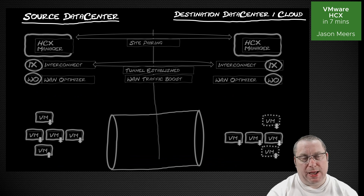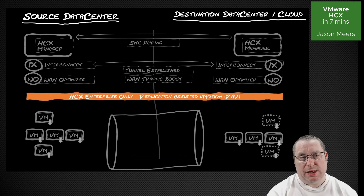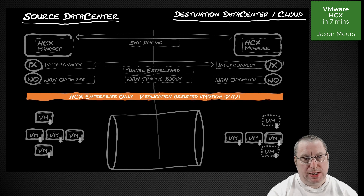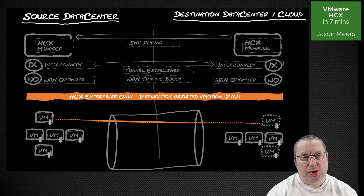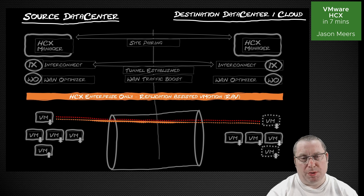This next feature is an HCX Enterprise-only feature called Replication Assisted vMotion. We've got the interconnect and WAN optimizer; it's up to us whether we use the network extension or not, but the only requirement is HCX Enterprise. This time I've got a virtual machine and I'm going to do a cold migration, but before I kick off the migration, I'm going to replicate the data underneath first so that when I start the migration, there's less data or less traffic to catch up. We basically seed the migration first and then kick it over.